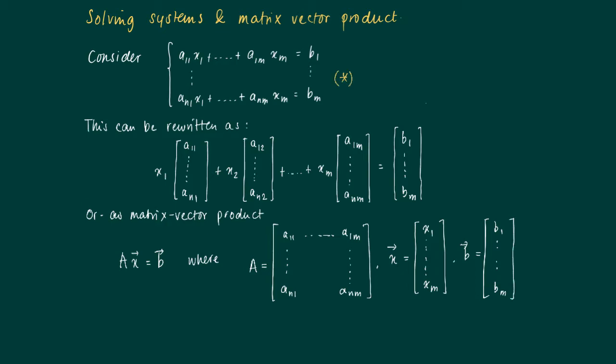So let's denote the system of linear equations with a star. Then solving the system of linear equations amounts to finding an x such that Ax equals b.